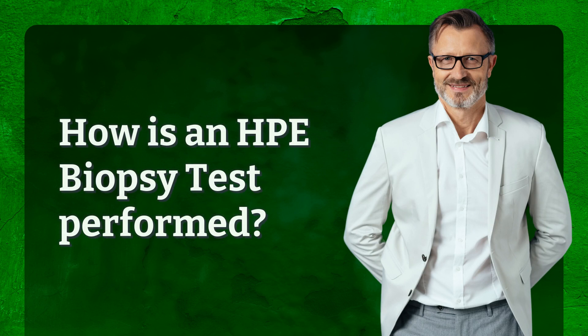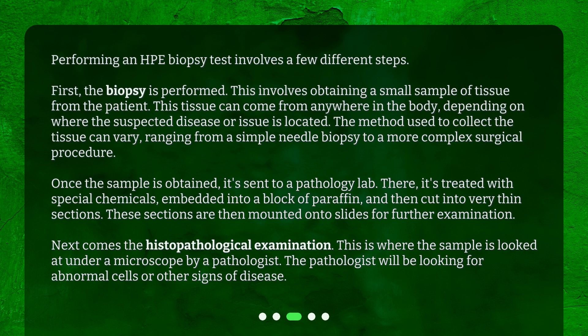How is an HPE biopsy test performed? Performing an HPE biopsy test involves a few different steps. First, the biopsy is performed. This involves obtaining a small sample of tissue from the patient. This tissue can come from anywhere in the body, depending on where the suspected disease or issue is located. The method used to collect the tissue can vary, ranging from a simple needle biopsy to a more complex surgical procedure.